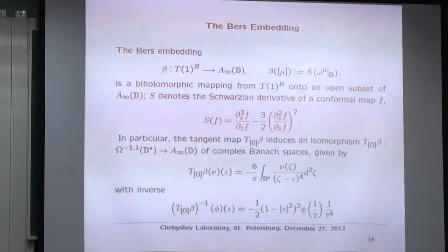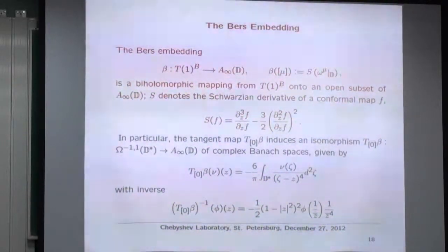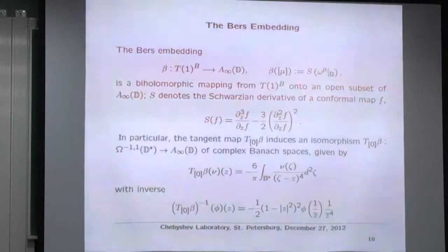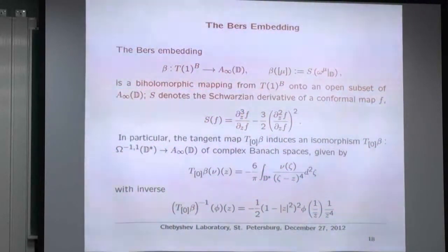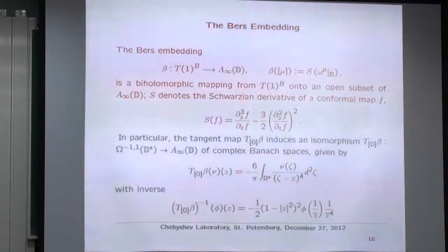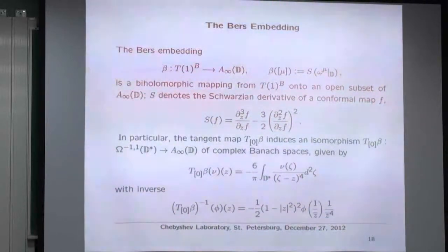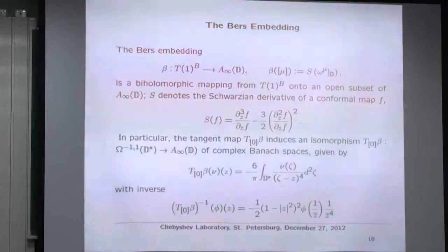T₁ is called the universal Teichmüller space because it contains as complex submanifolds all the Teichmüller spaces of Fuchsian groups. In this theory there is a very important theorem: the Bers embedding. There is a map from T₁ into A∞(D) given by taking the second model ω̃^μ restricted to the open disk and taking the Schwarzian derivative. This map depends only on the class of μ, and it is a biholomorphic mapping from T₁_B onto an open subset of A∞(D). In particular, the tangent map induces an isomorphism from Ω⁻¹·¹ to A∞(D).